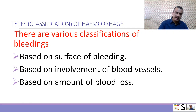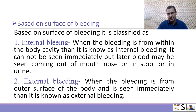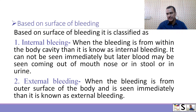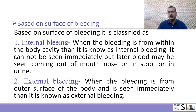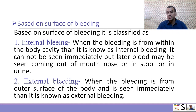First, classification based on surface of bleeding: it is classified as internal bleeding and external bleeding. Internal bleeding is when bleeding occurs within the body cavity or under the skin — it is concealed and not visible immediately, but later blood may be seen coming out of the mouth, nose, stool, or urine. External bleeding is from the outer surface of the body and can be seen immediately.